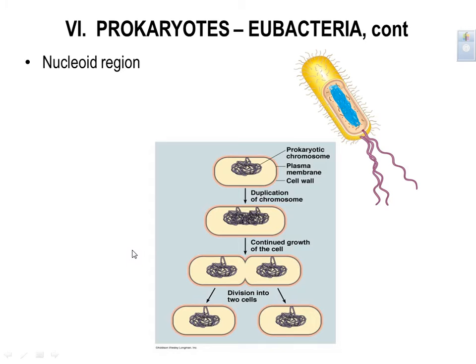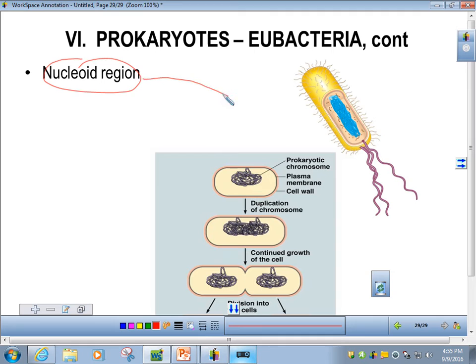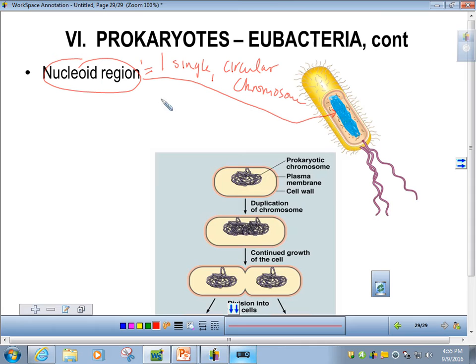Let's talk about how bacteria divide. Bacteria have a nucleoid region — not a true nucleus, but a region inside the bacteria where you'll find one single circular chromosome. It's not bound by a nuclear envelope, but it is an area in the middle of the cell where their genetic material is found. That is a double-stranded DNA, like what we have.